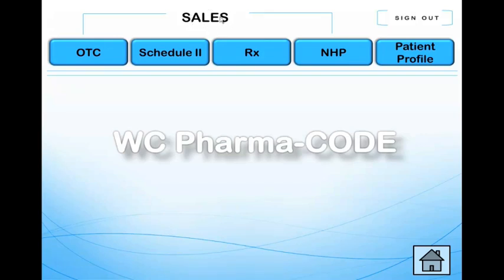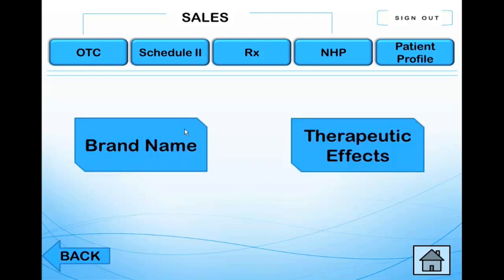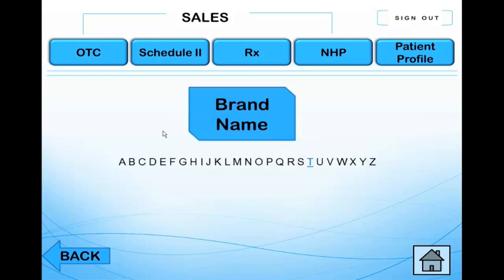You can see sales of different products like OTC or Schedule 2. Prescription and the natural health products, they are options too. So if you want to see over-the-counter sales, just go click the button. Then you can choose how to search.